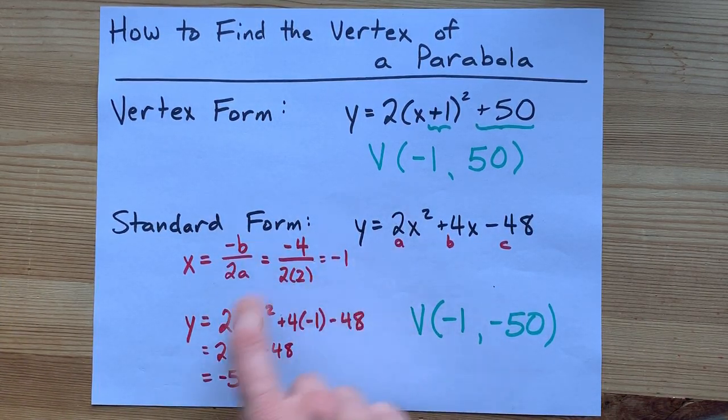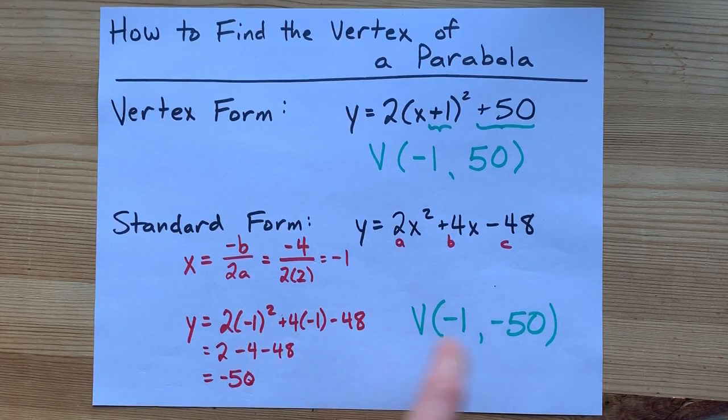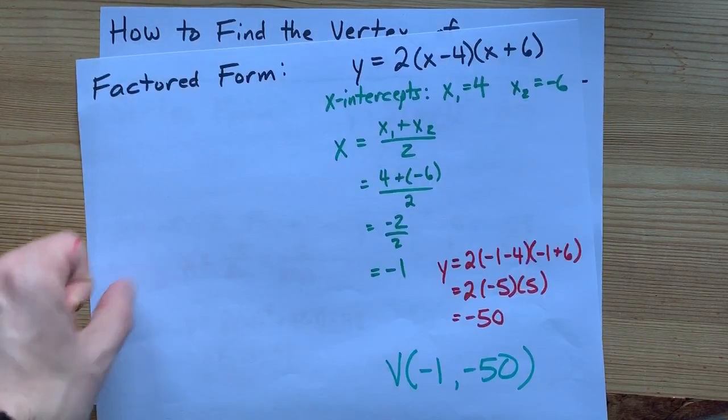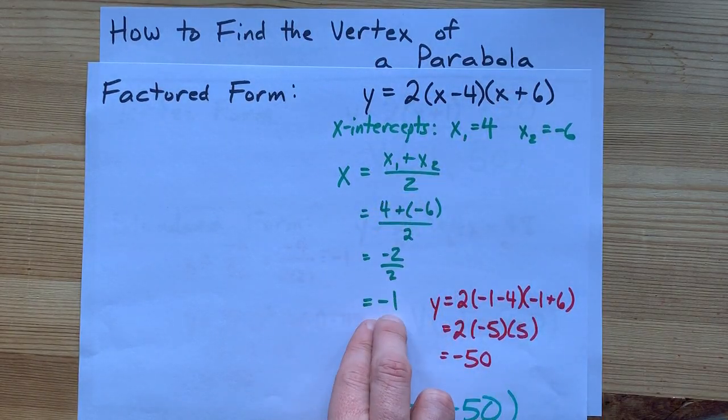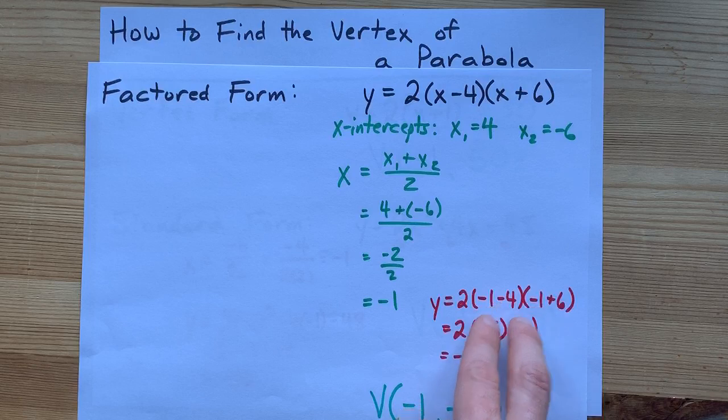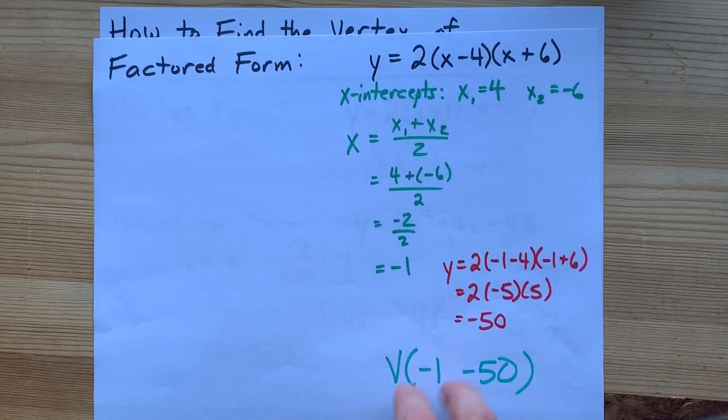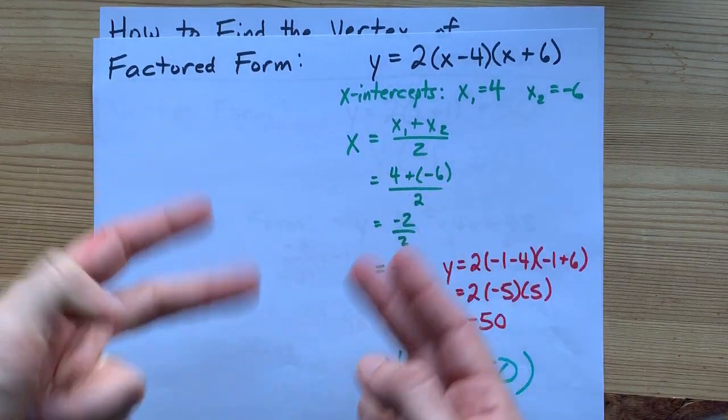Take that x value, plug it in, and get the y. Factored form is similar. Find your x-intercepts. Average them together to get your x. Plug it into the equation to get your y. Also done. Best of luck.